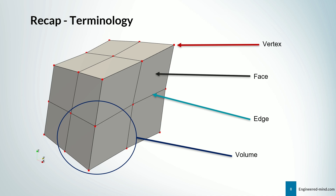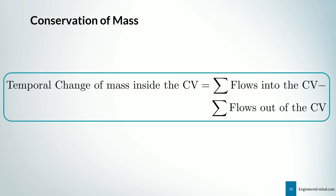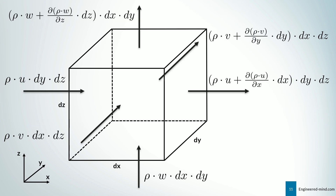Now a recap about the terminology. We will focus on a volume — we take an infinitesimal volume and have a look at that. We will call that an infinitesimal element or control volume, and the lengths of this element are denoted by dx, dy, and dz respectively. The conservation of mass states that the temporal change of mass inside of our control volume equals the flows into the control volume minus the flows out of the control volume. I will explain it step by step. This shows the fluxes inside of our control volume and the fluxes going out.